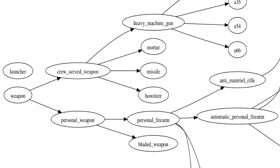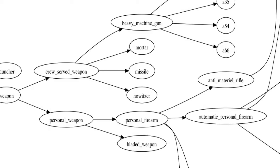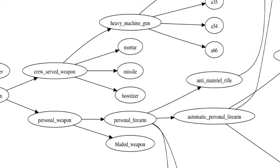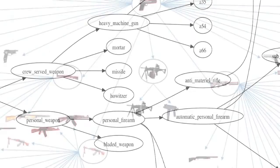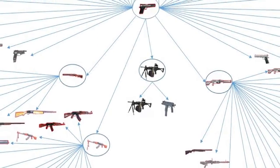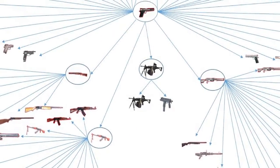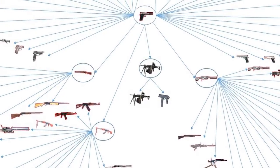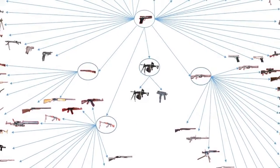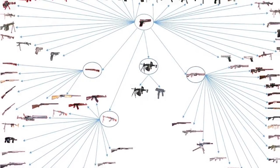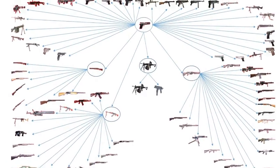I'm proud to announce here that this is the first weapon ontology in the world. It contains multiple pistols, multiple rifles, and multiple machine guns.